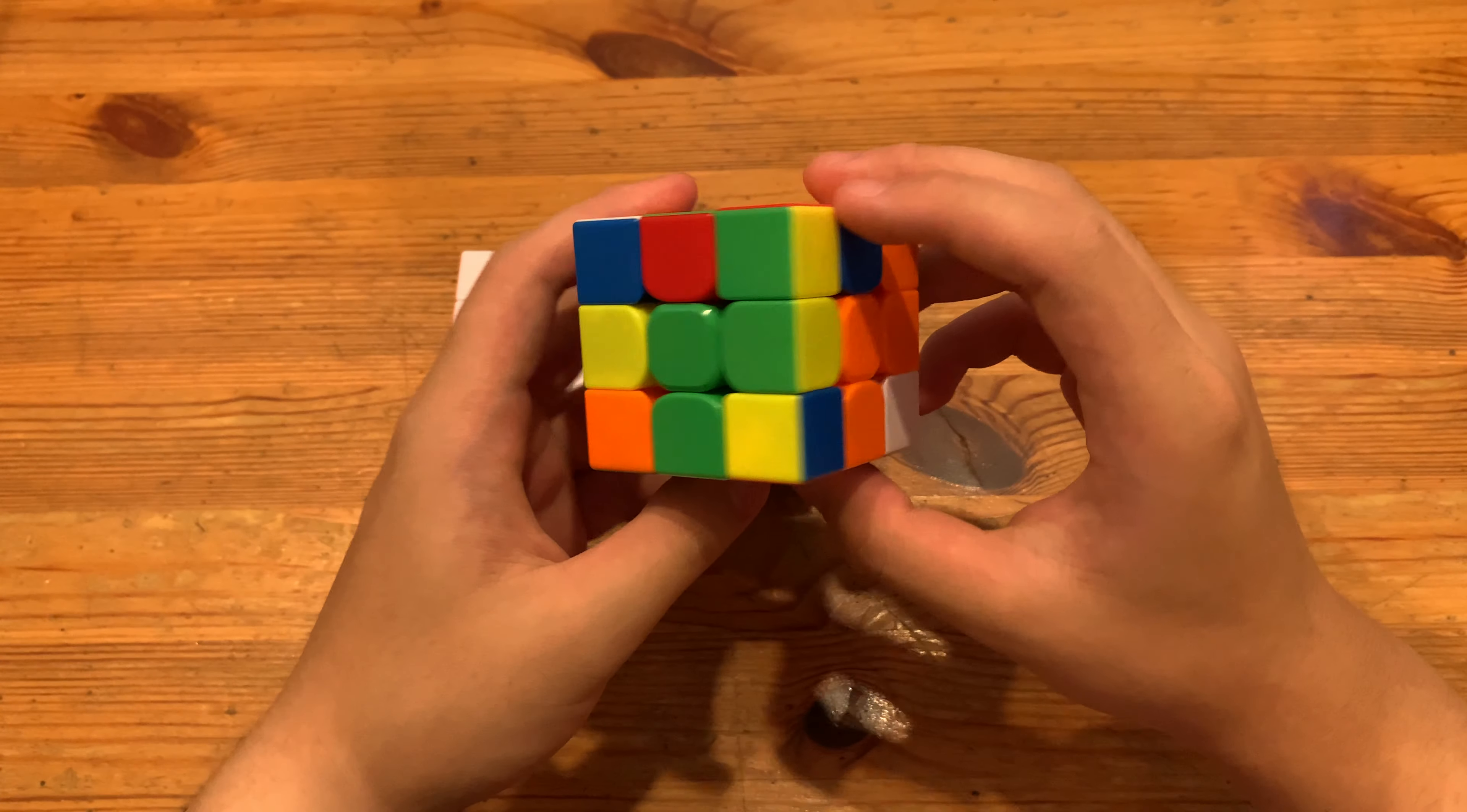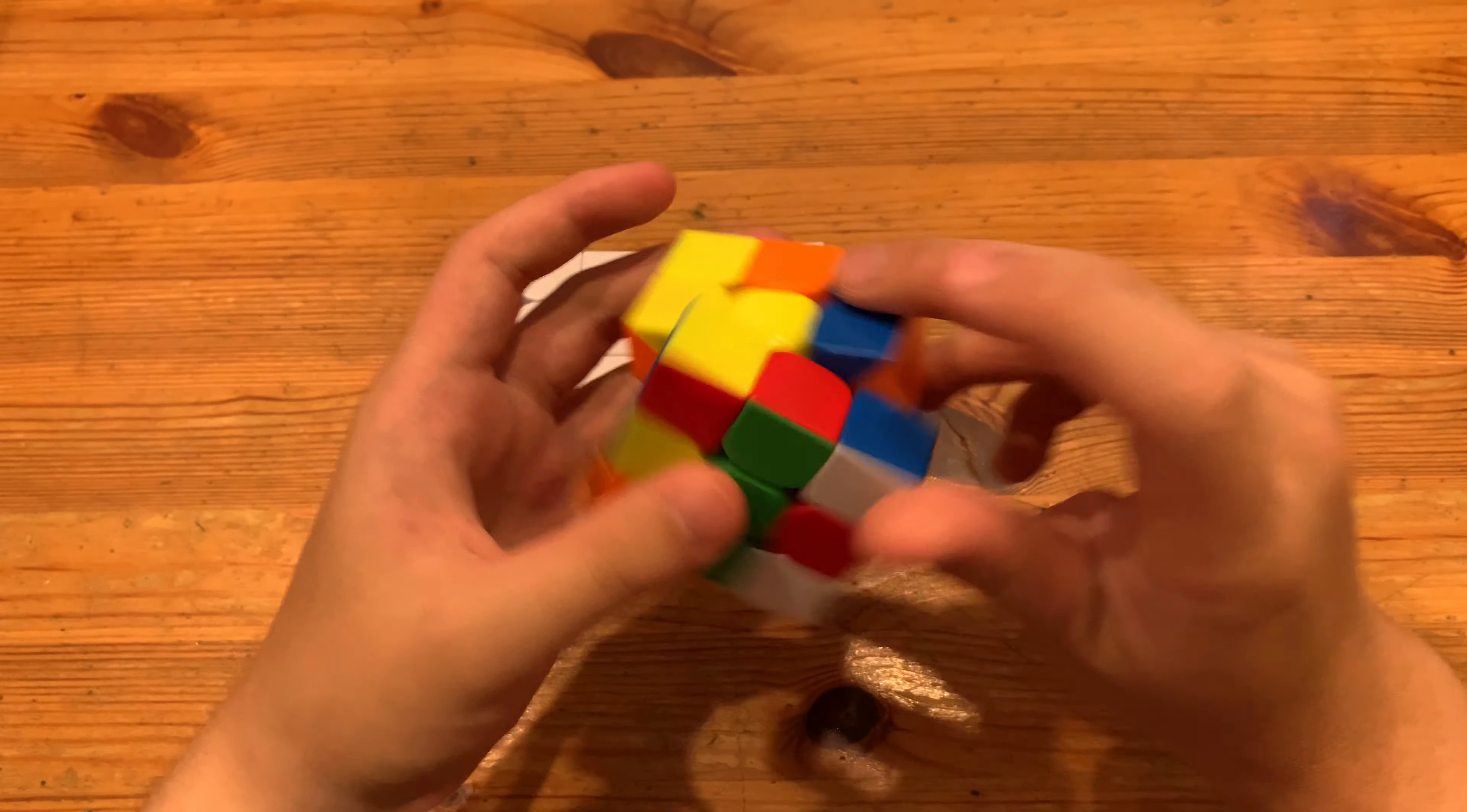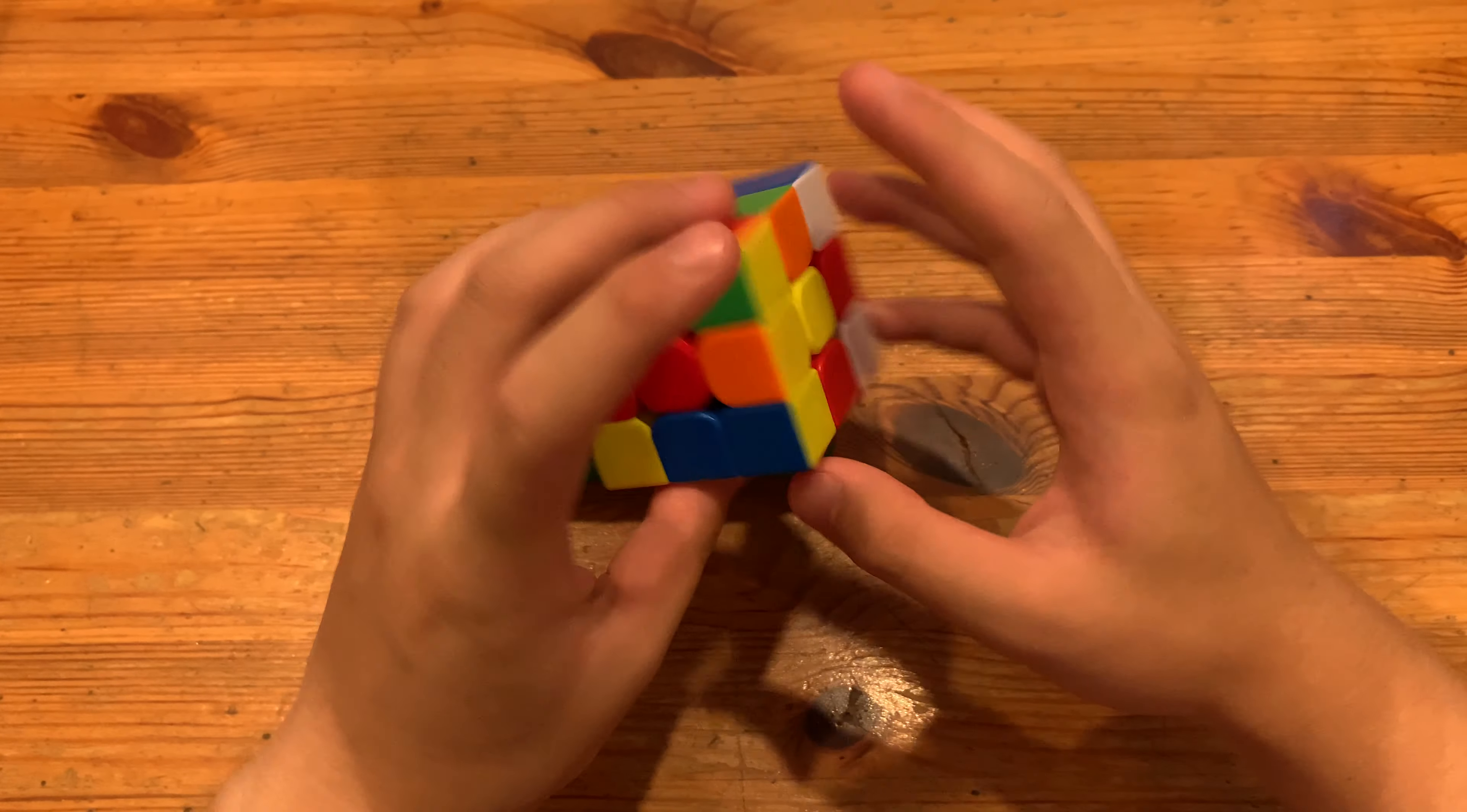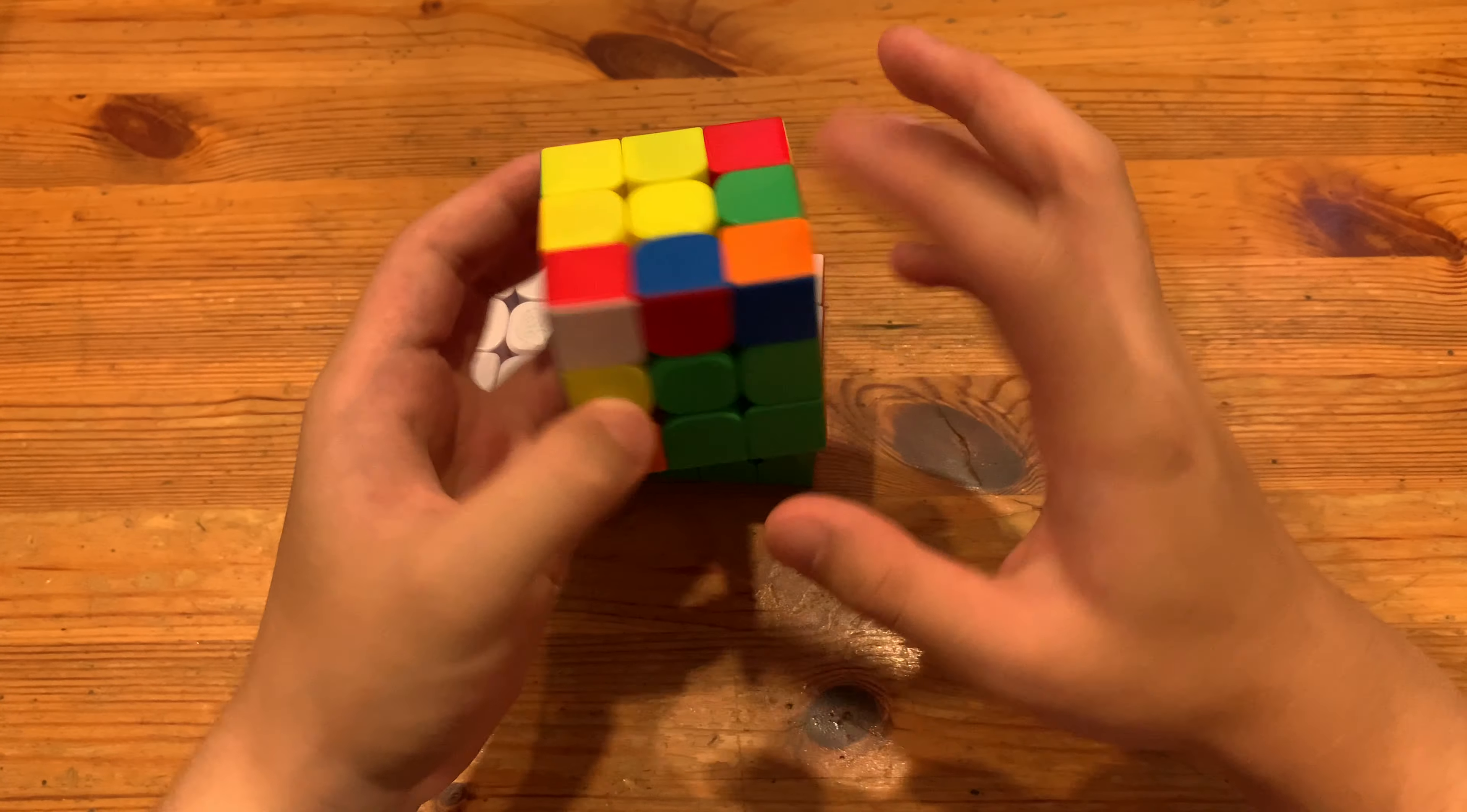Then here I'll just solve the first pair. The first pair I plan is just this pair. So what I'll do is U prime, R prime, U2 prime, sledgehammer. And then I'll probably just do R and then grow it into this F2L pair by doing F prime, L prime, U2, L, F to solve it. Then here I'll just solve this pair with 2Gen.